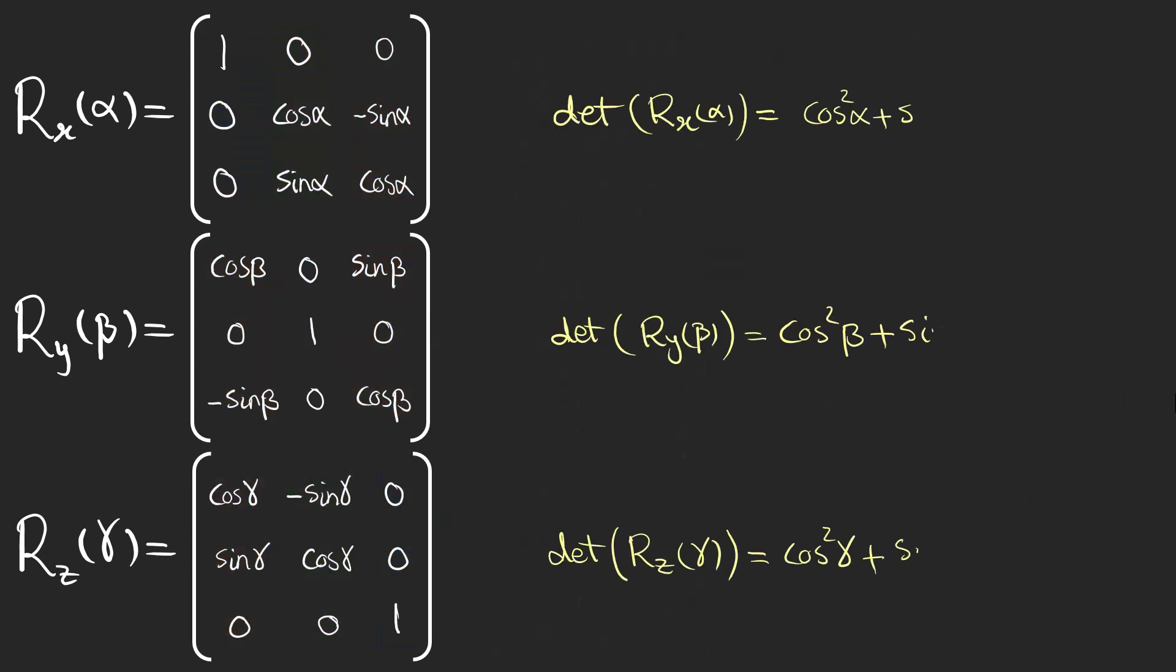One property of rotation matrices is that their determinant is always equal to 1. This means that a rotation preserves both the volume and the orientation of objects, volumes don't get stretched or squashed, and a right-handed system remains right-handed, without any reflection.